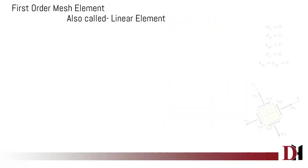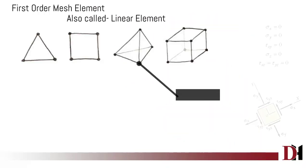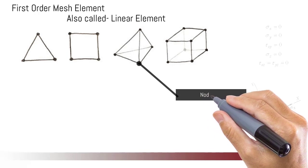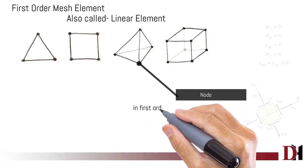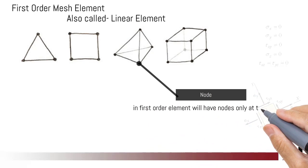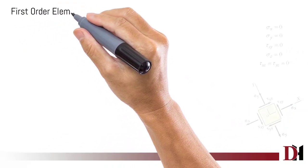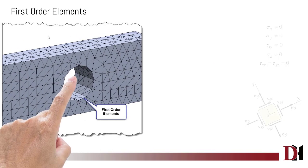First order elements are also called linear elements. In first order elements, nodes are always in the corners. As you can see in the picture, first order elements cannot capture curvature.